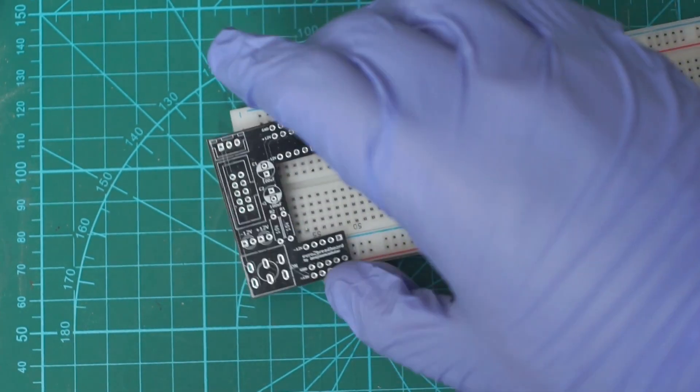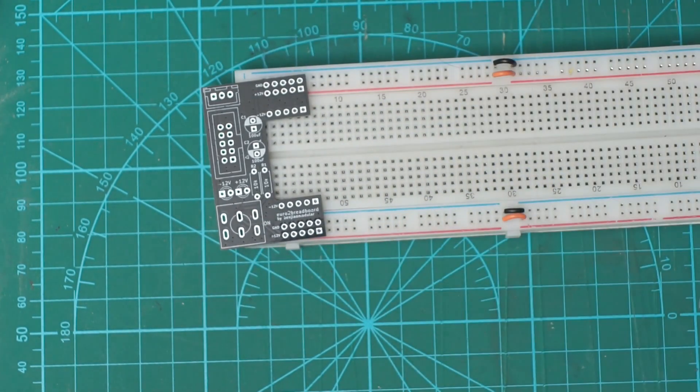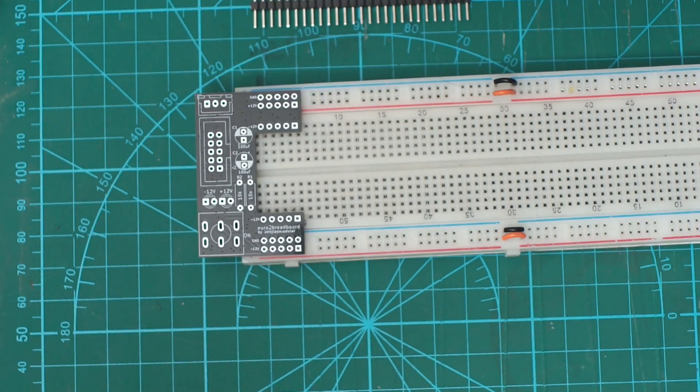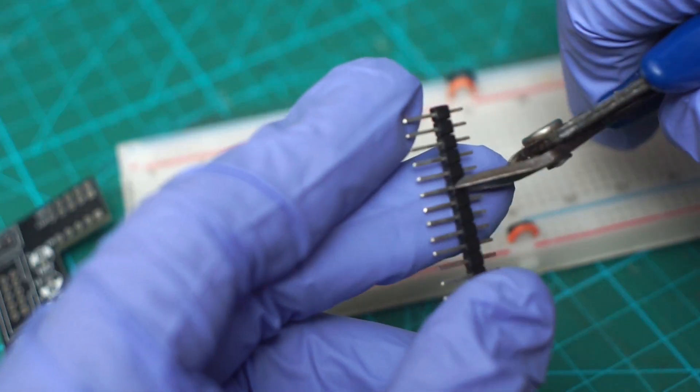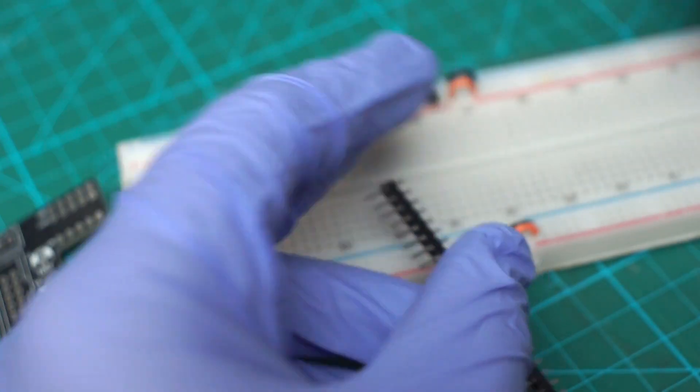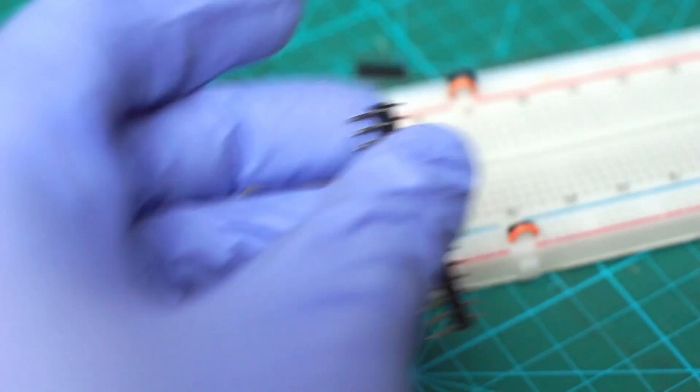I messed up the dimensions for this version of the PCB. It's slightly narrower than the breadboard. I already fixed this on version 1.1 but for now, I'll try to make this work instead of waiting for a new batch of PCBs to arrive.